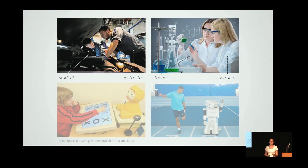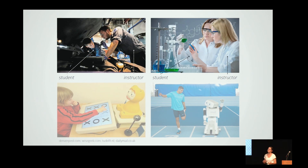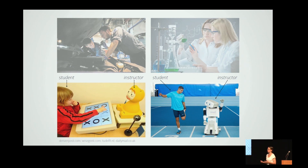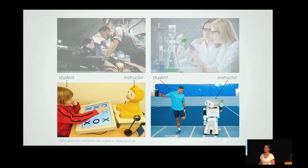Humans often engage in a variety of instructional tasks on a daily basis. For example, a mechanic might train a new employee on a particular maintenance task, or a student might help their partner in lab with what step comes next in an experimental protocol. We refer to the person giving instructions as the instructor and the person acting on the instructions as the student. Similarly, in the future we expect robots will fulfill instructional roles in society, guiding humans through a series of steps such as tutoring students or providing instruction in a particular exercise.